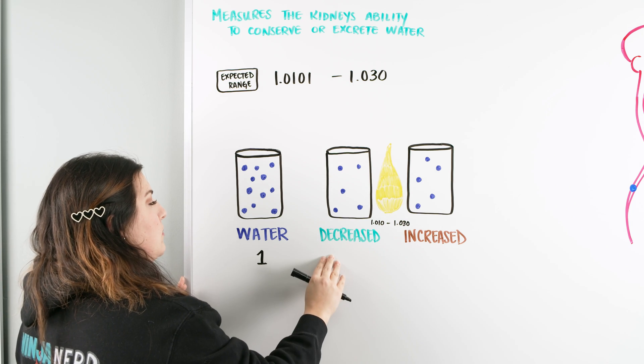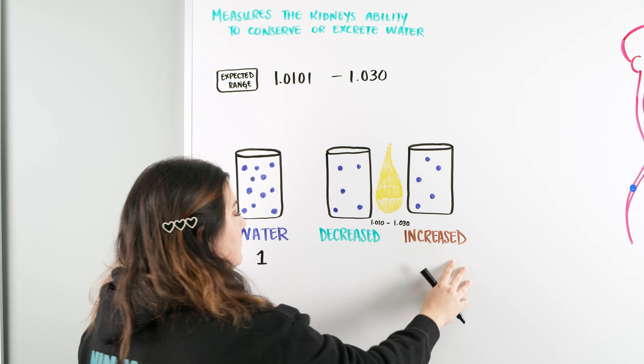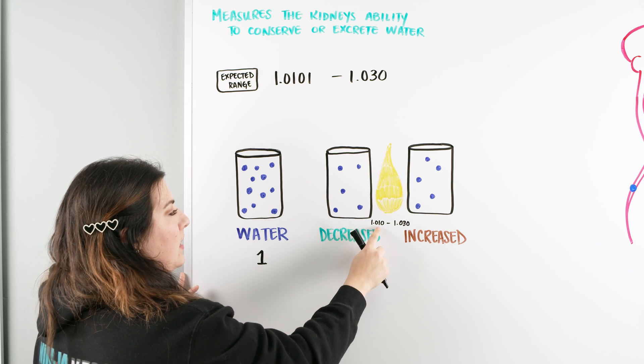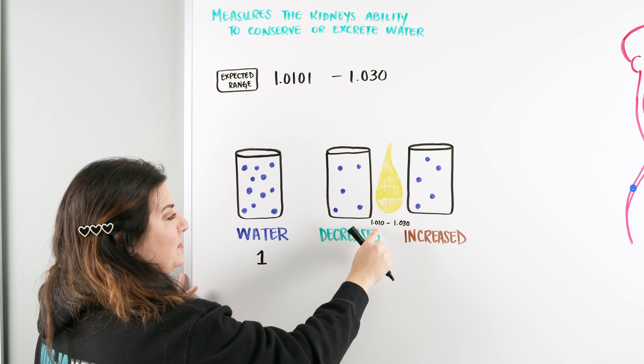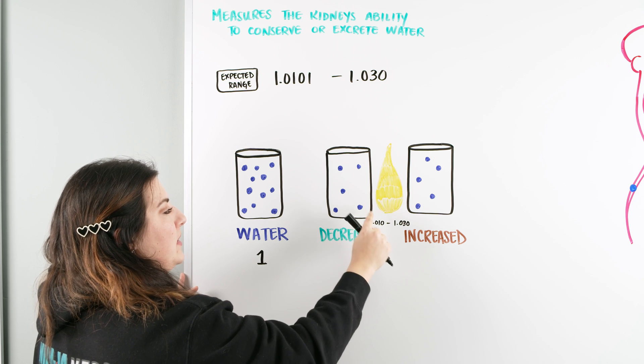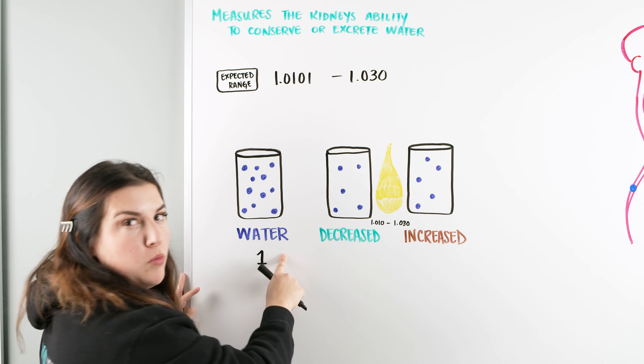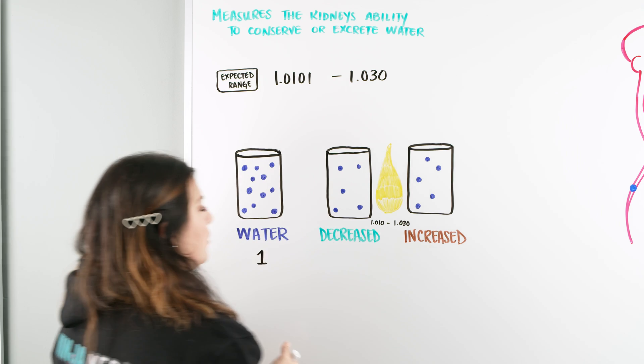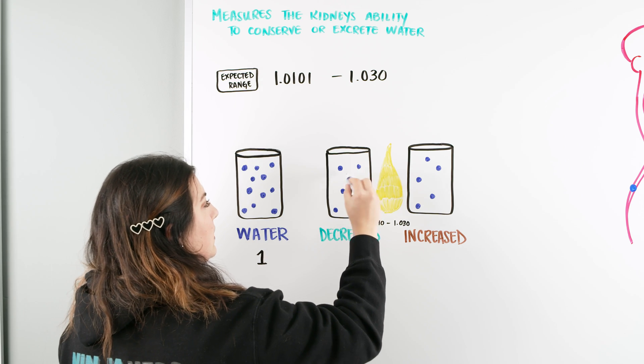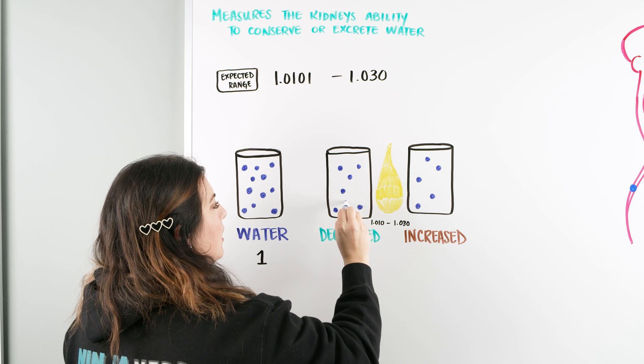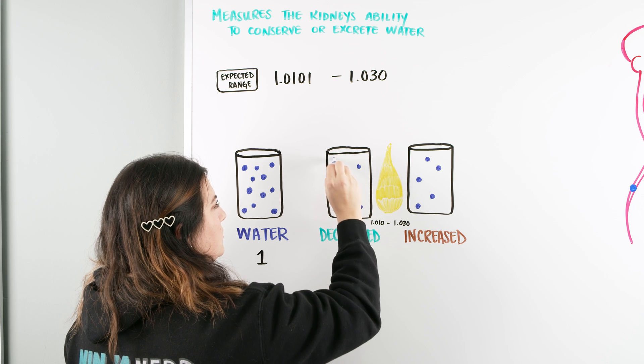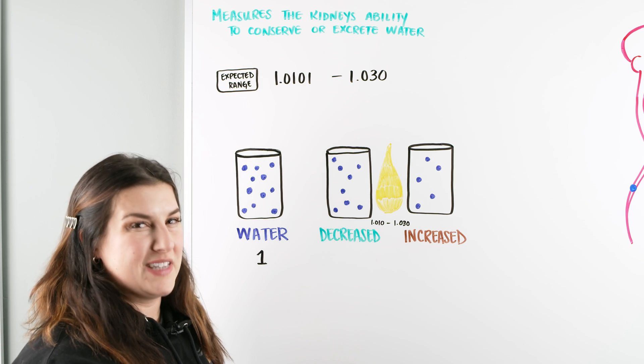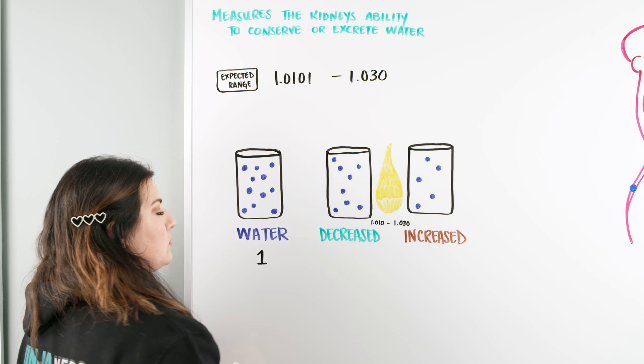So we can either have decreased or increased. So again, let's think about water. If water is 1 and anything less than 1.010 is considered decrease, it means that we're getting closer to water. So we have some water molecules in here. And when we're talking about decreased, we're looking at something that maybe has a little more water. So this urine in this patient has a little more water in it, so it's a little more dilute. It's decreased, it's closer to water.